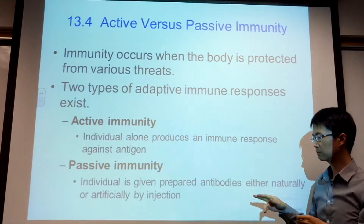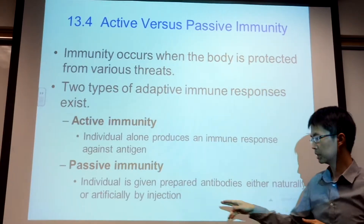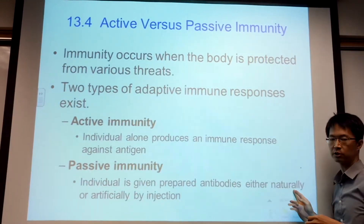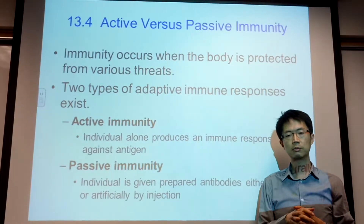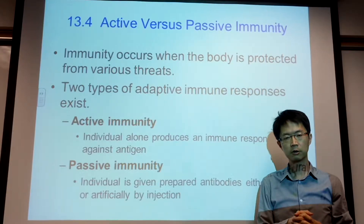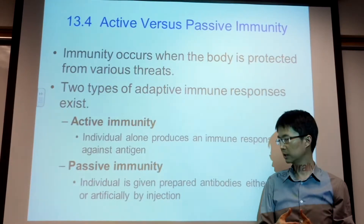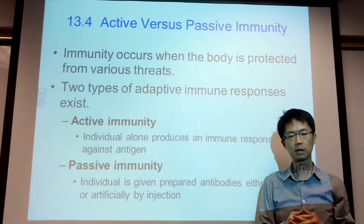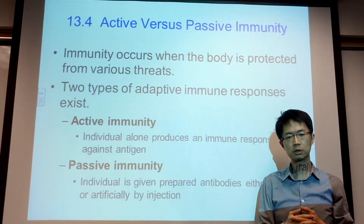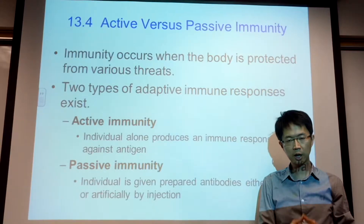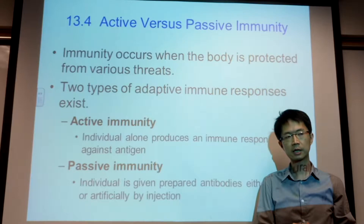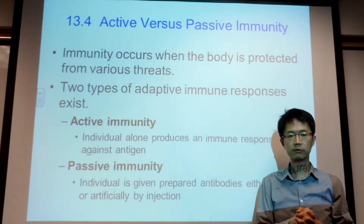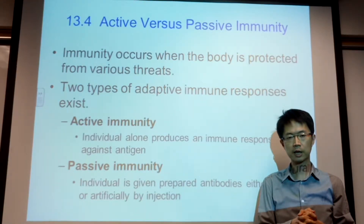Passive immunity is when you don't go through an infection or get a vaccine, but you receive antibodies directly — either by injection or naturally. For example, when a mother is nursing a baby, her milk contains antibodies, so when the baby drinks the milk, the baby acquires those antibodies directly from the mother without getting the infection. The antibodies from the mother's milk protect the baby.